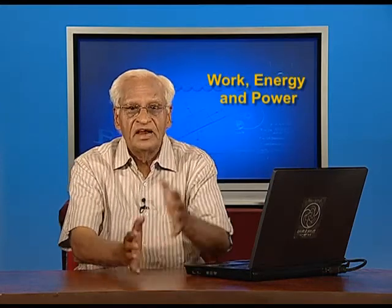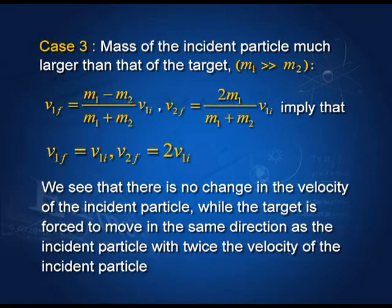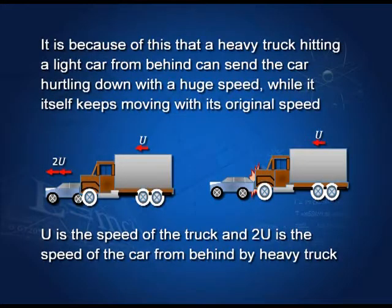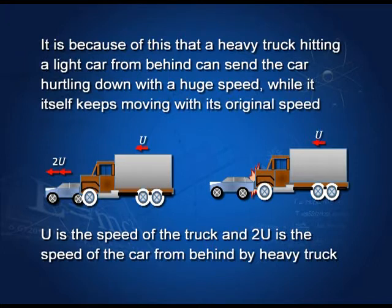Case 3: a very heavy particle collides with a very light particle. Here v₁f = v₁ᵢ — the velocity of the incident particle remains essentially unchanged — whereas the target's velocity equals twice the velocity of the incident particle. A truck hitting a stationary car from behind keeps moving with the same velocity u, while the car now moves with double the velocity of the truck. That means the car suffers a great deal of damage when a truck hits it from behind.